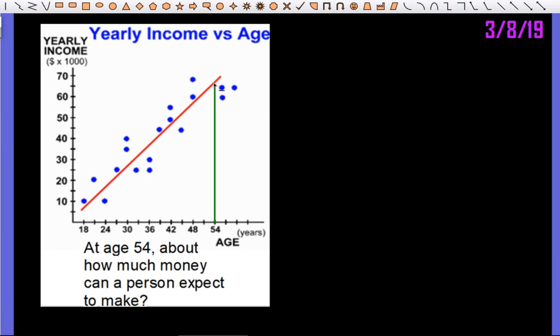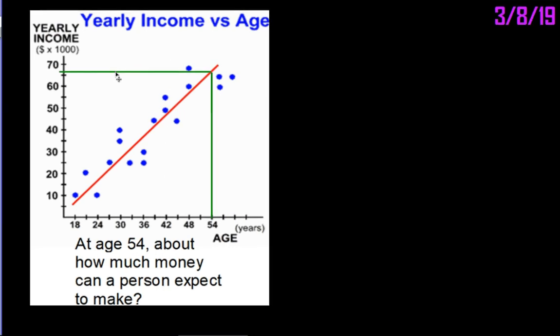It's going to be right in the middle of $70,000 and $60,000. So right in the middle is going to be about $65,000. If you're making $65,000 at age 54, that's not too bad—you've done pretty well for yourself.